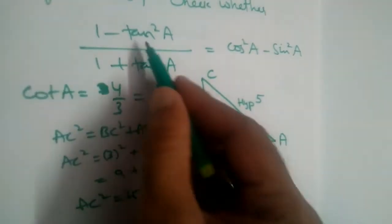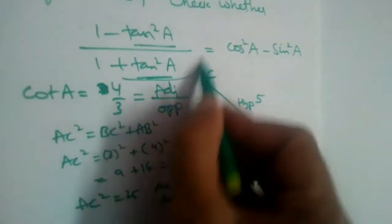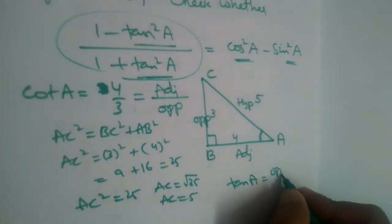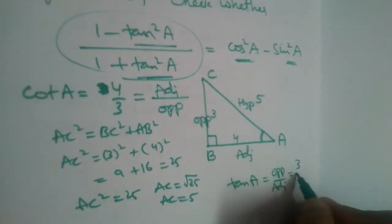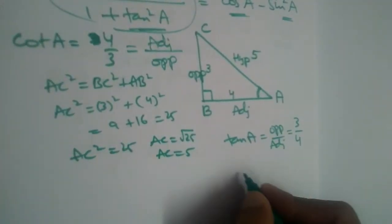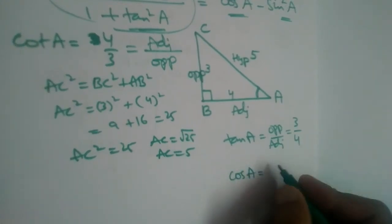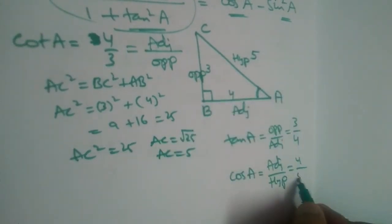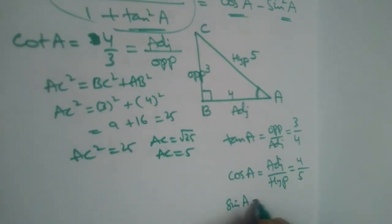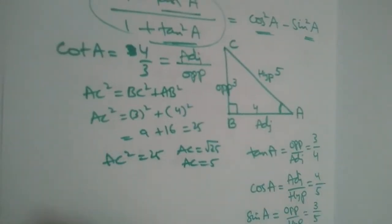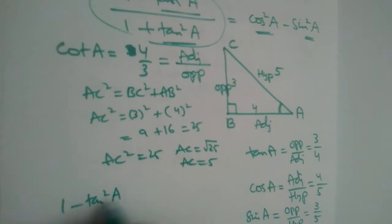Now let us find the values we need to substitute. Tan is opposite over adjacent, so tan(a) = 3/4. Cos(a) is adjacent over hypotenuse = 4/5. Sin(a) is opposite over hypotenuse = 3/5.